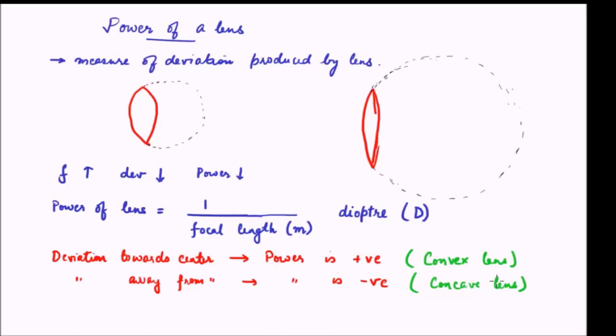For example, if we have a convex lens of focal length 20 centimeters, what will be its power? Its power will be 1 divided by 0.2 meter, which is 5 diopter. And since it is a convex lens, it is positive 5 diopter. If it were a concave lens of focal length 20 centimeters, then the power would have been minus 5 diopters. The important idea is that we must measure the focal length in meters to get the power in the correct diopter units.